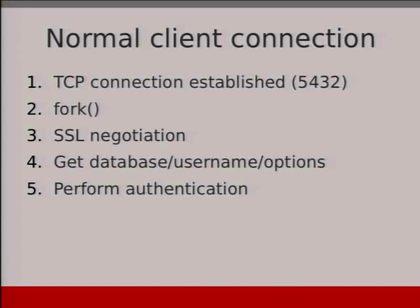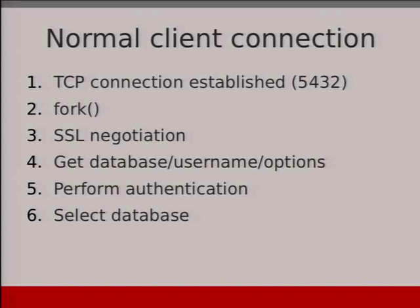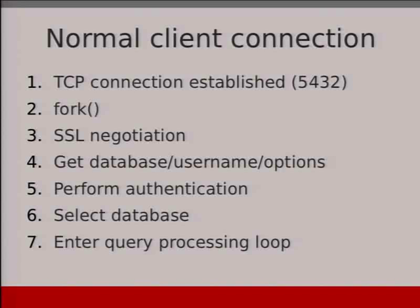Once we have enough to find the row in pg_hba.conf, we perform authentication — whether it's username and password, Kerberos, LDAP, or SSL certificates. If authentication fails, we terminate the connection. If successful, we select the database: Postgres runs a chdir into the data directory and preloads the cache with system table entries specific to that database. Then we enter the query processing loop — get a query, send a response — and keep doing that until we're done with the connection.